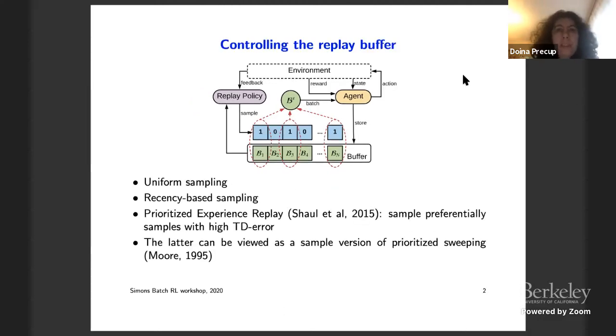In other words, if the agent has visited some part of the state space and then moved away from there, if data from that part of state space is still in the replay buffer, the agent is still going to be able to rehearse on that data. Now, there are different ways to control the replay buffer. And so by controlling the replay buffer, what we mean is which samples do we get from this replay buffer? The simplest thing to think about is to do uniform sampling.